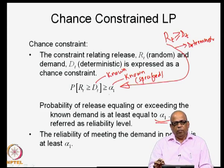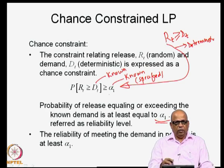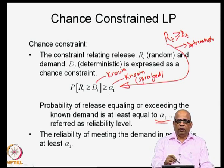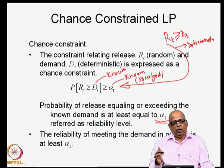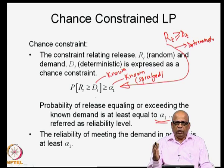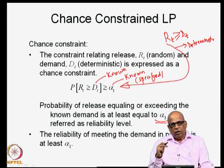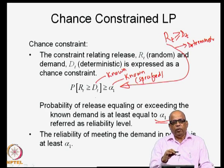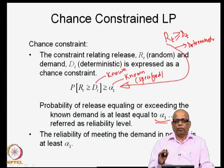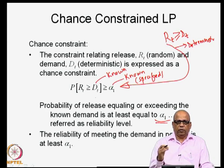This constraint, converted from the deterministic constraint R_t ≥ D_t, becomes: Probability(R_t ≥ D_t) ≥ α_1. This becomes a reliability constraint, a chance constraint, or a probabilistic constraint — all three are synonymous. We have converted the deterministic constraint into a chance constraint.